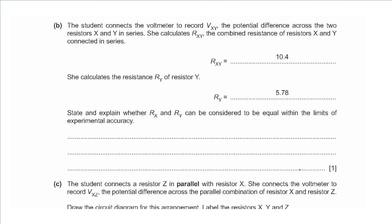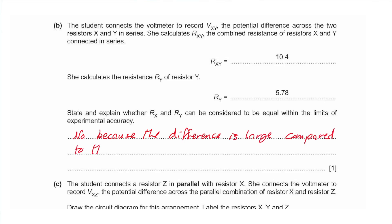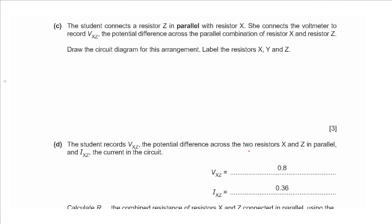Part b: the student measures Vxy across X and Y in series. The combined resistance Rxy is 10.4 Ω and the calculated resistance Ry is 5.78 Ω. Comparing Rx = 4.6 Ω and Ry = 5.78 Ω, the difference is large relative to the values themselves, so no — they cannot be considered equal within experimental accuracy due to the large percentage difference.